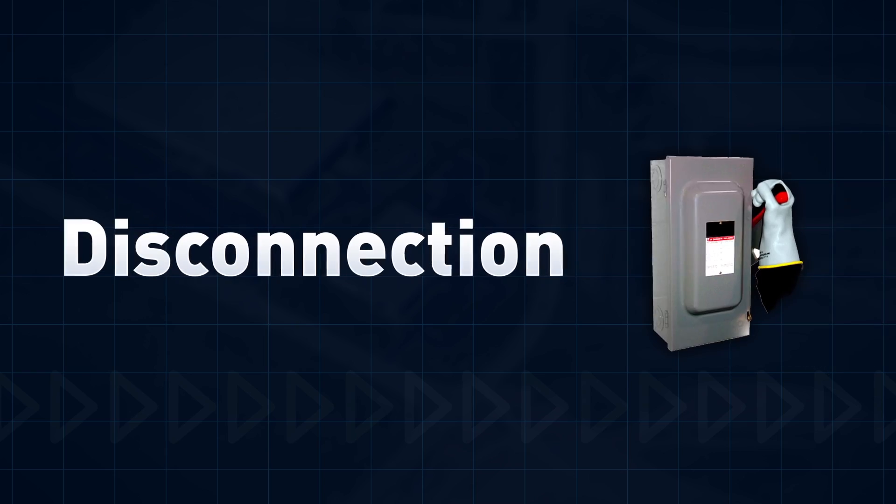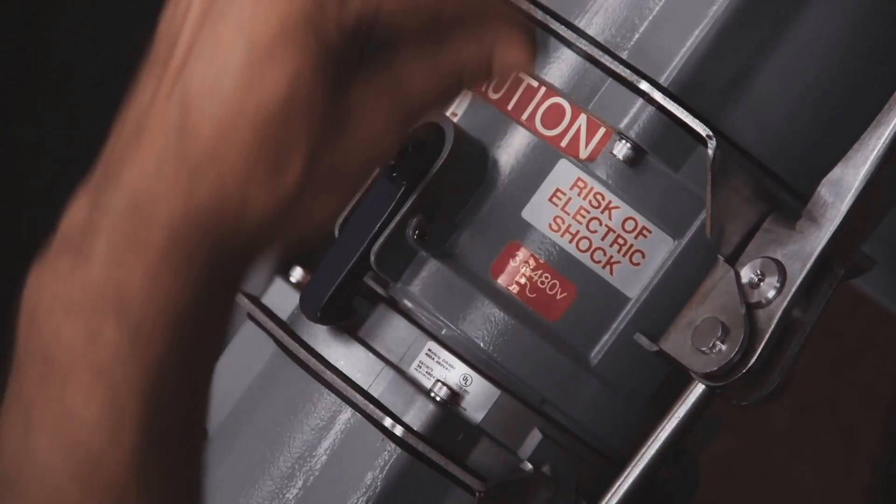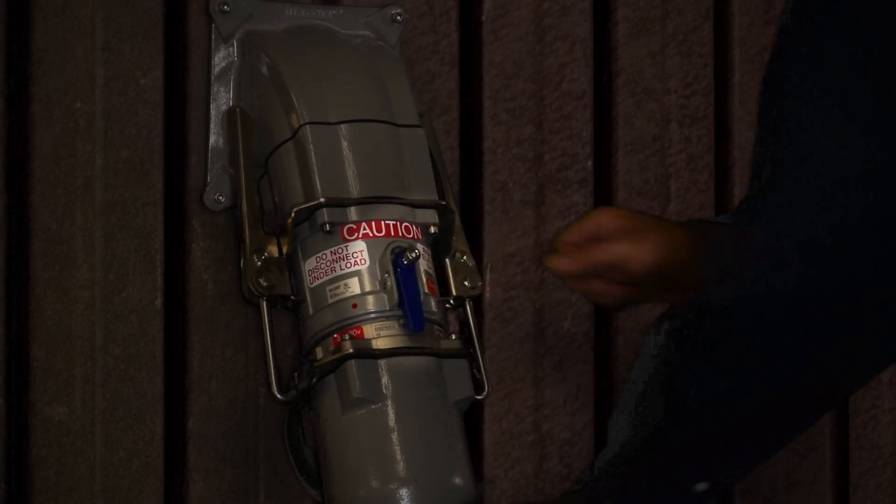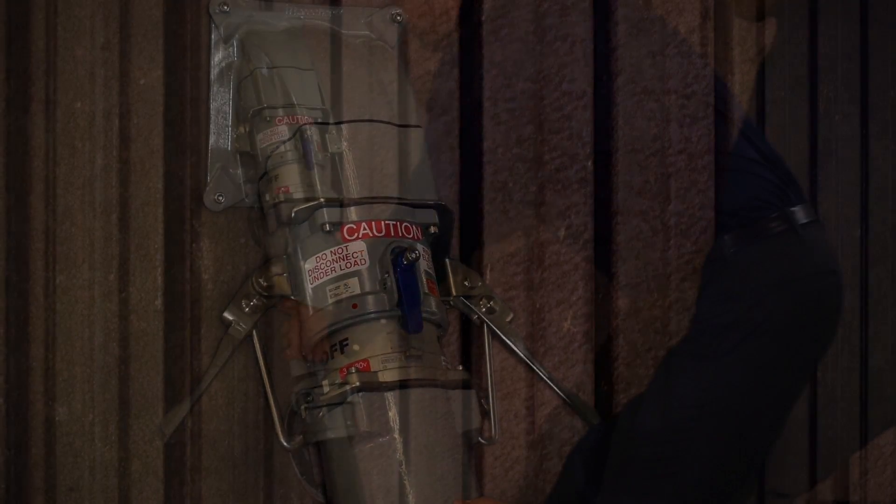To disconnect the plug, de-energize the circuit, unscrew the pawl to the unlocked position, and press to eject the plug to the rest position.